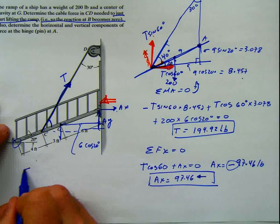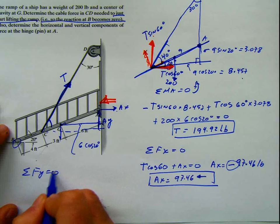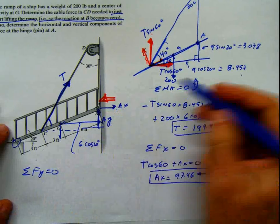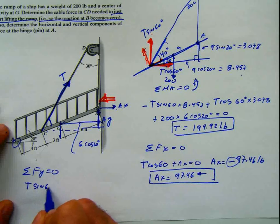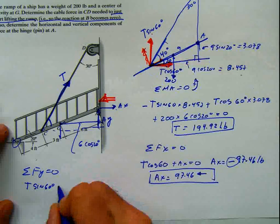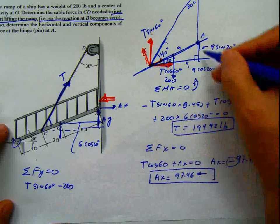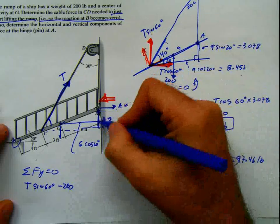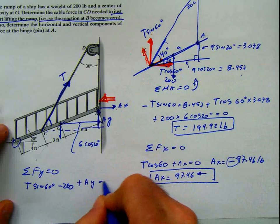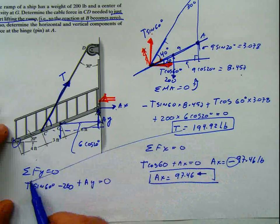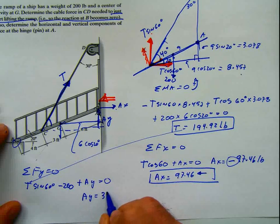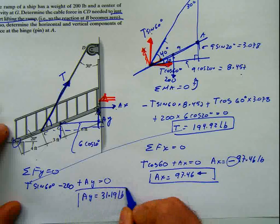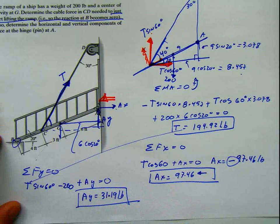Summation of forces in y equals zero: T sine 60 minus 200 plus Ay — remembering Ay is acting upward — equals zero. I know T, so I plug it in and get Ay equals 31.19 pounds. And we have the solution.